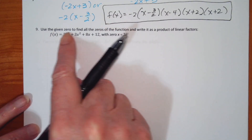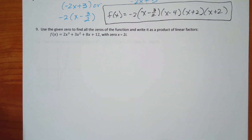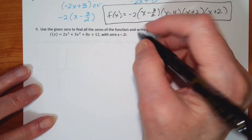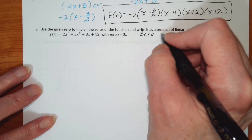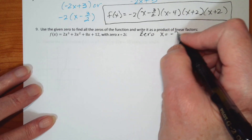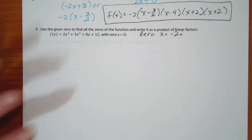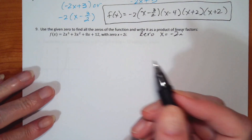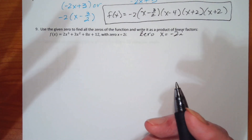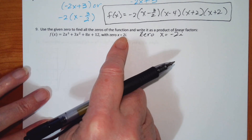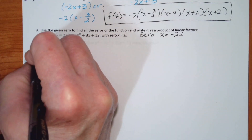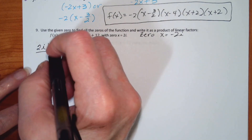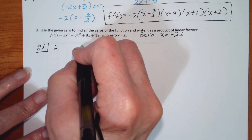Use the given zero to find all the zeros and write it as a product of linear factors. If I have a zero of x equals 2i, then I also have a zero of x equals negative 2i. I'm going to do this two different ways. Starting with synthetic division: if I have a zero of 2i, the polynomial has degrees 3, 2, 1, 0 — everything's in order — so I divide by 2i and leave myself some room.